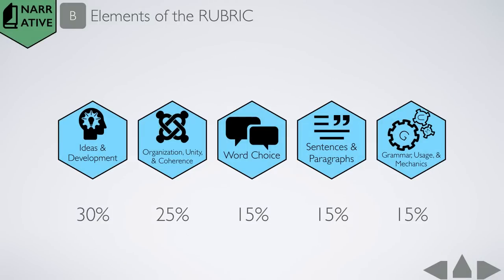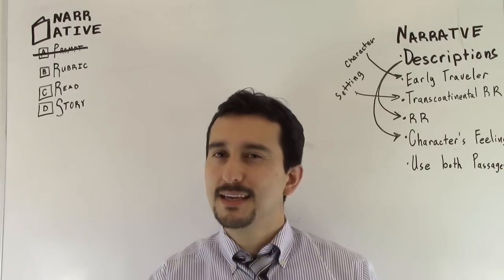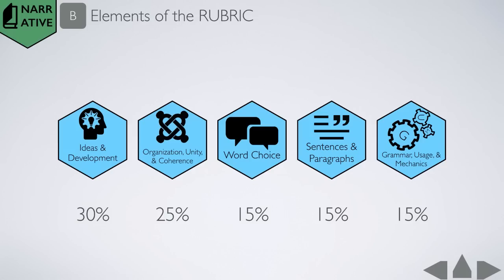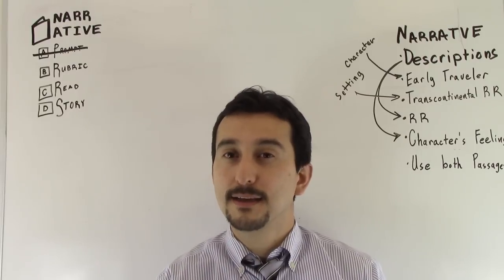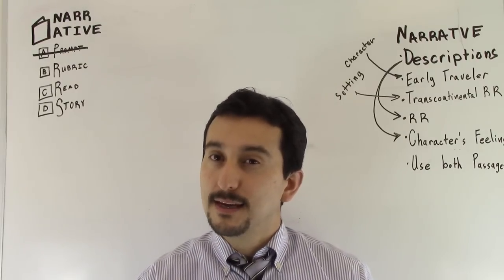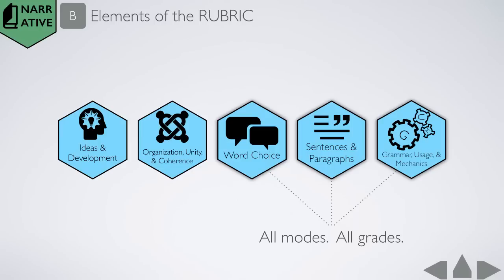Now the rubric has five categories that are being assessed in the final writing, and as you can see by the different percentages, they each hold different weights except for those last three here: word choice, sentence and paragraphs, grammar usage and mechanics. These categories only hold 15% weight of the entire grade, and as an added bonus, they're the same for eighth grade as they are for fifth grade and vice versa.